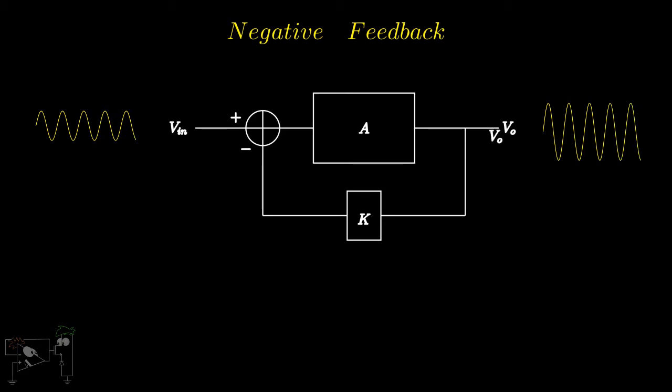Let us calculate the gain of an amplifier when connected in negative feedback. If we simplify this further, the closed loop gain of the system becomes A upon 1 plus K into A. This value is less than A, the open loop gain.